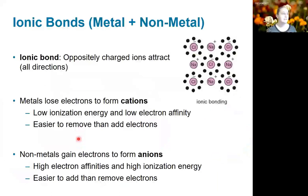First, let's look at ionic bonds. Ionic bonds occur whenever you have oppositely charged ions that are attracted to each other. The prototypical example is sodium chloride, where chlorine has taken the electron from sodium and now has a negative charge, and sodium, which lost its electron, has a positive charge. Those attractions occur in all directions. In general, metals will lose electrons to form cations because metals have a relatively low ionization energy. It's relatively easy to remove electrons, and they also don't want more electrons. They have a low ionization energy and also a low electron affinity.